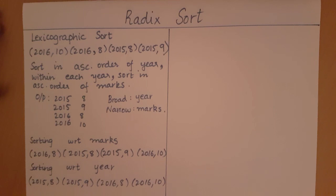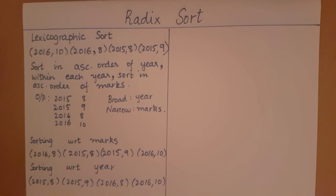Radix sort is a type of lexicographic sort in which the stable sort used — the sorting algorithm used here — is going to be bucket sort. That is the only specification. So when we are sorting with respect to a particular dimension in radix sort, the sort we use is bucket sort.